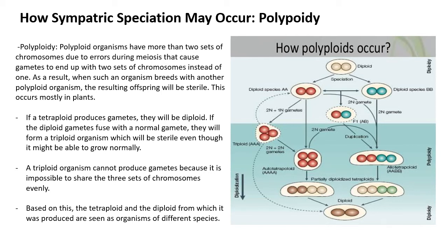Let's think about the different types of polyploid. A tetraploid is an organism that has four sets of chromosomes. If it undergoes meiosis and splits, its chromosome number will be diploid. If that diploid gamete fuses with a normal haploid gamete, they'll make a triploid organism — one with three sets of chromosomes. A triploid will be sterile even though it might grow normally, because it cannot split three sets of chromosomes evenly to produce gametes.